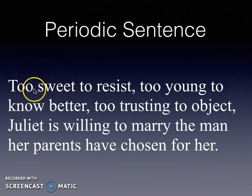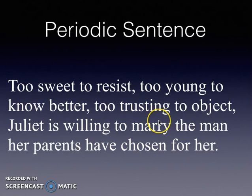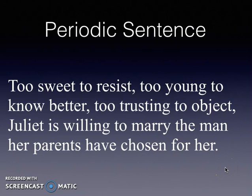We talked about trying to use phrases — a series of parallel phrases before the main idea. I started all of my phrases with 'too, too, and too,' which as you know is anaphora. Too sweet to resist, too young to know better, too trusting to object — Juliet is willing to marry the man her parents have chosen for her.